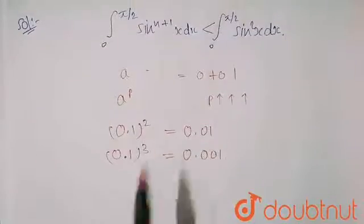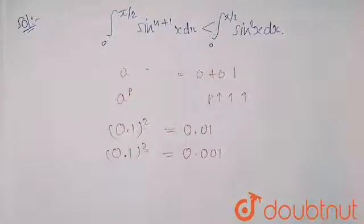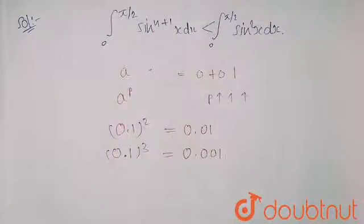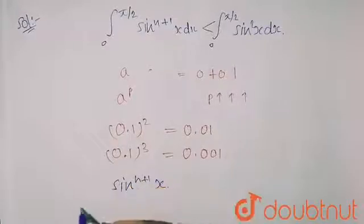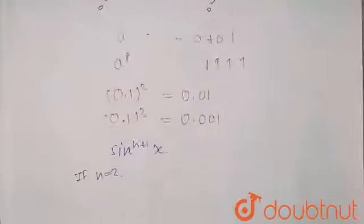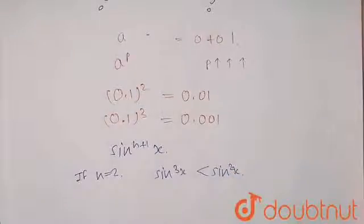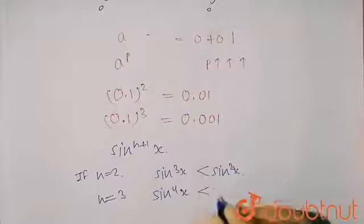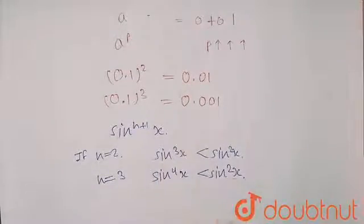Applying this: on one side we have sin^(n+1)(x) and on the other side sin²(x). If you increase n, the value of sin^(n+1)(x) will decrease. For example, if n = 2 you get sin³(x), which is less than sin²(x). If n = 3 you get sin⁴(x), which is again less than sin²(x). So for any n > 1, sin^(n+1)(x) < sin²(x).